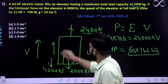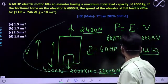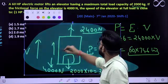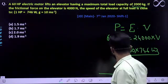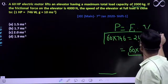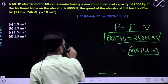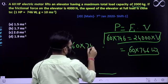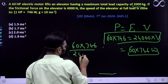So let me quickly rub this off so that you can see the calculation easily. Okay? So solve this into v. Okay? So if I solve this expression, then v comes out to be 60 into 746 divided by 24,000.